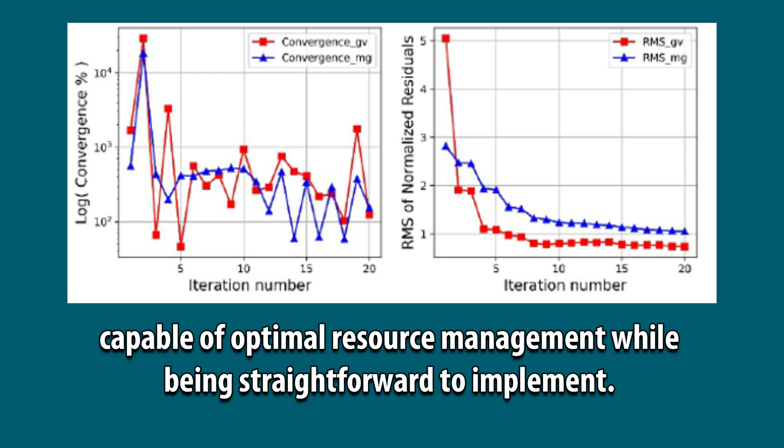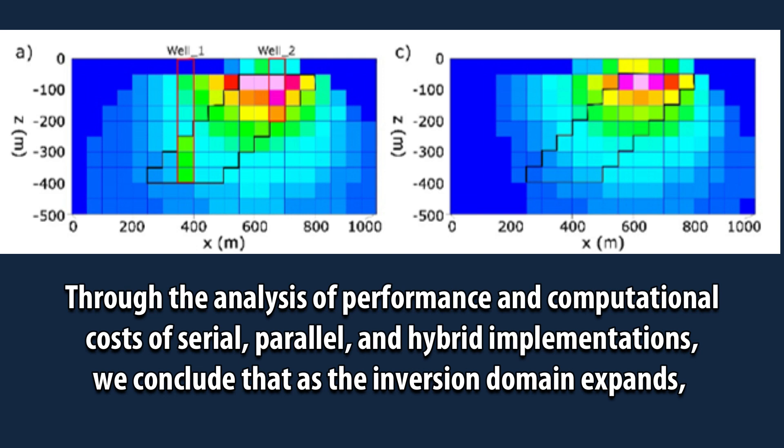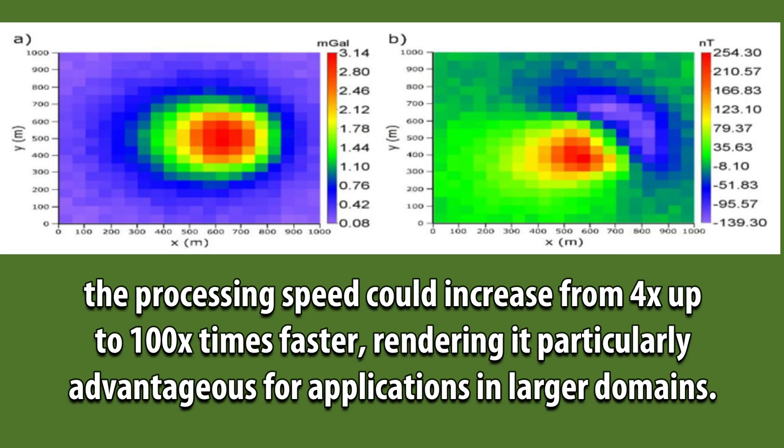Capable of optimal resource management while being straightforward to implement. Through the analysis of performance and computational costs of serial, parallel, and hybrid implementations, we conclude that as the inversion domain expands, the processing speed could increase from 4x up to 100x times faster, rendering it particularly advantageous for applications in larger domains.